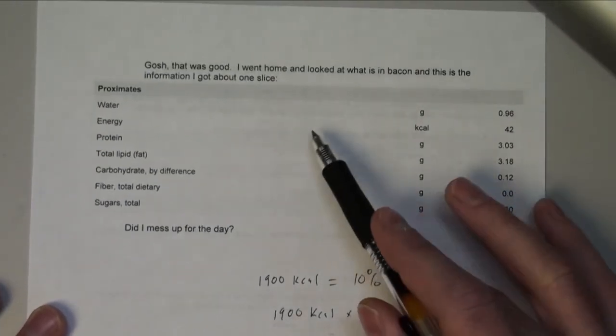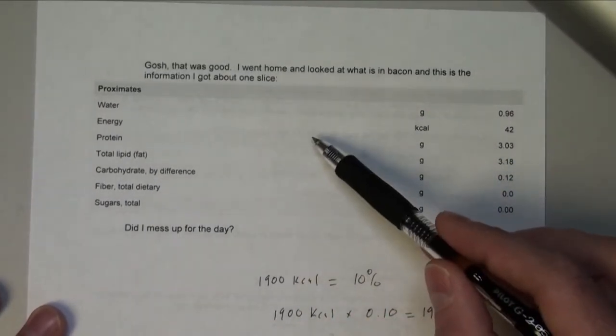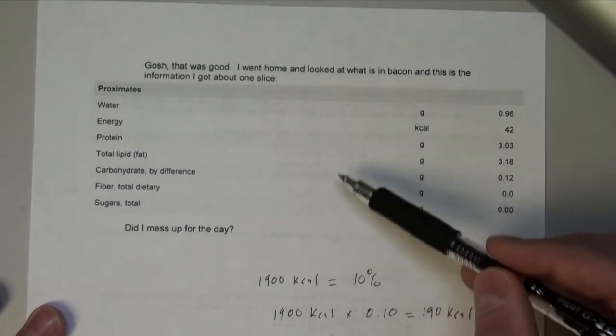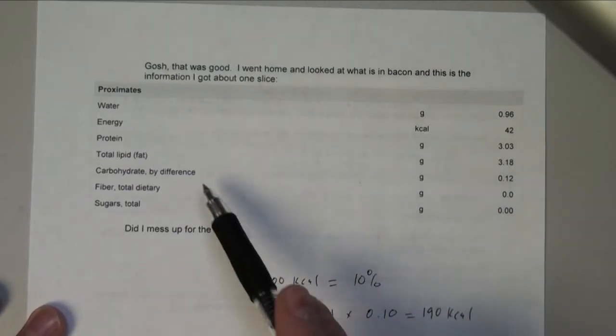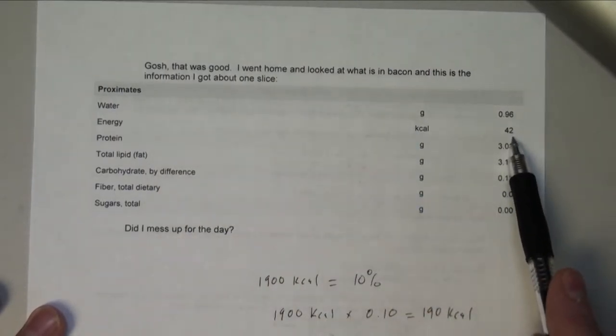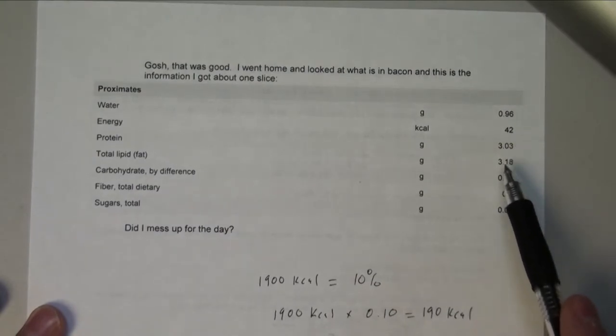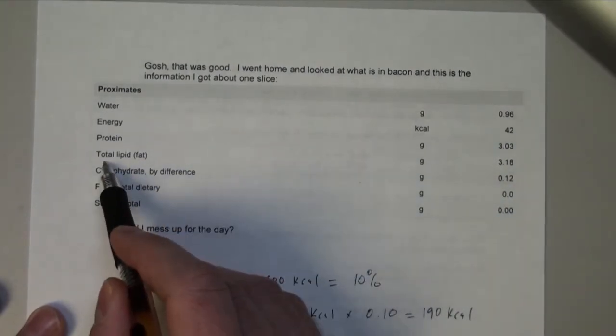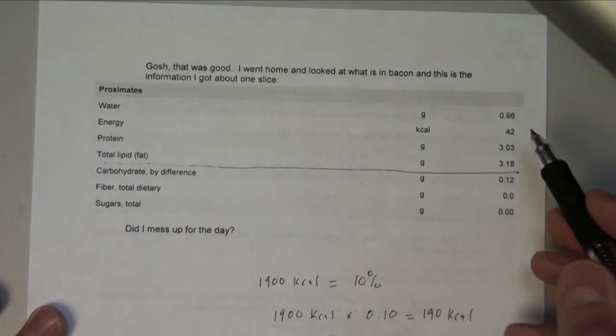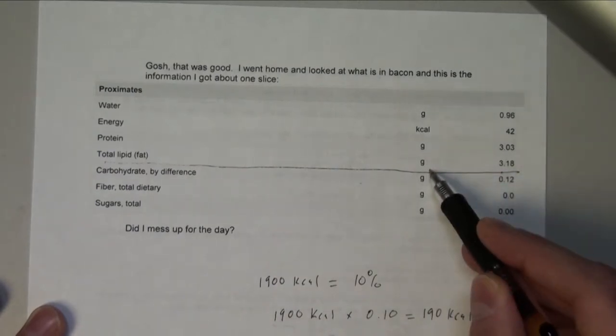Because as you can see, I have information on what one slice of bacon will have. Now granted, it does tell me energy, so I could do calculations that way. But also, right here, if we look at total lipids, it tells me per slice there is 3.18 grams.